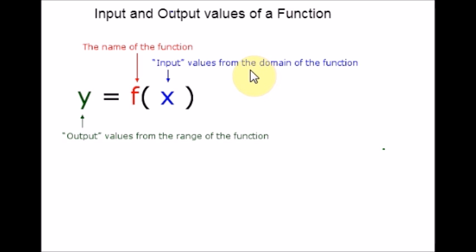When we know an input and want to determine the corresponding output for a function, we evaluate the function. Evaluating will always produce one result because each input value of a function corresponds to exactly one output value. So when we know an output value and we want to determine the input values that would produce that output value, we set the output equal to the function's formula and solve for the input. Solving can produce more than one solution because different input values can produce the same output value.